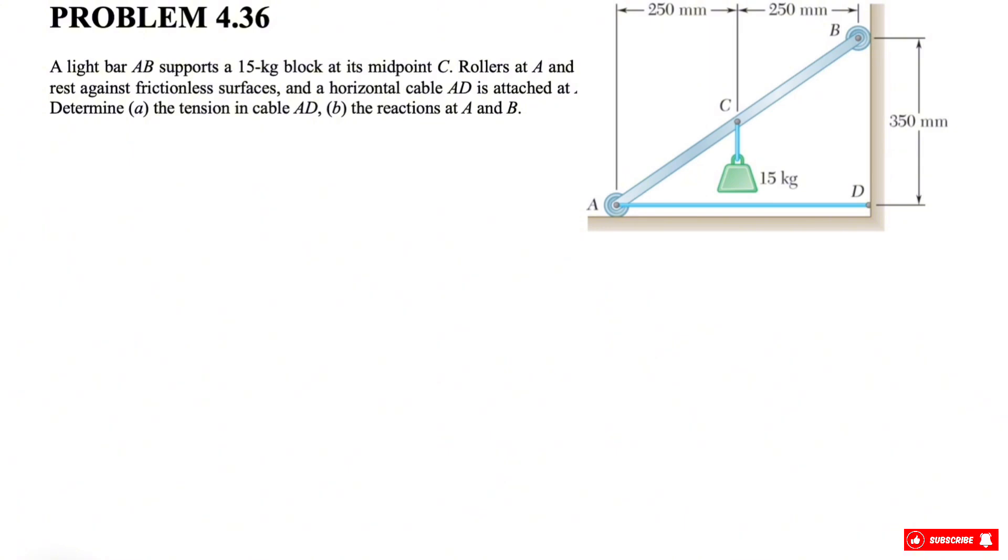Let's get started. So we're going to start by drawing the free body diagram. We have this bar AB. At point C, we have the 15 kilogram force, which is obviously the mass of the block. If you want to find the weight, we have mass times gravitational acceleration, which is 9.81 meters per square second. So we have 15 times 9.81.